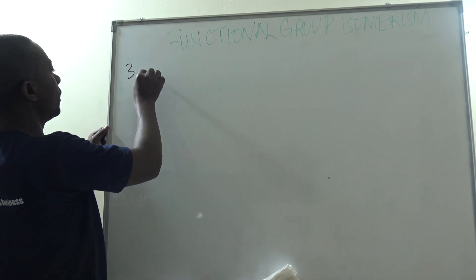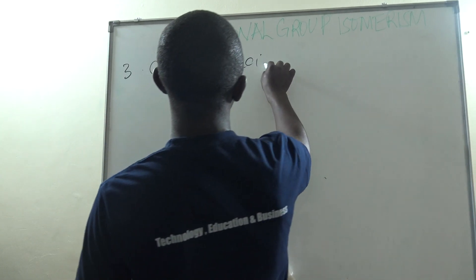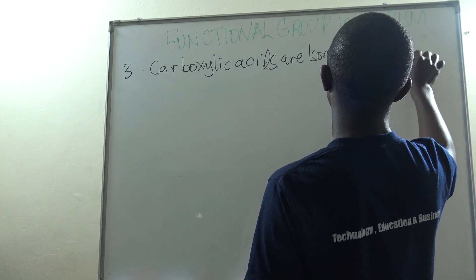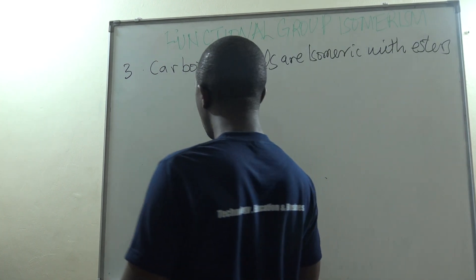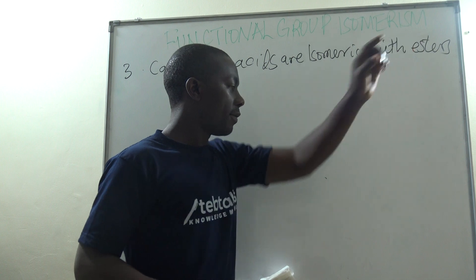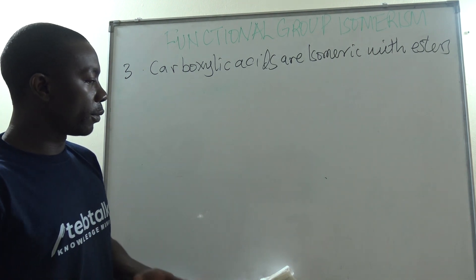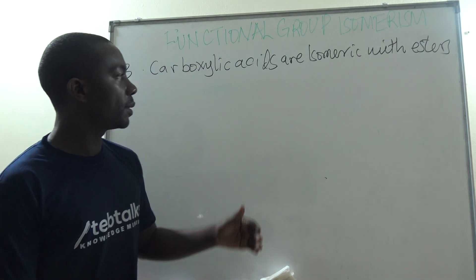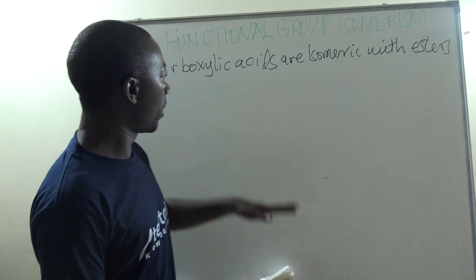Another group of compounds is carboxylic acids. Carboxylic acids are isomeric with esters. The difference between the two is that carboxylic acids have a terminal functional group, while esters have an internal functional group — the same principle that applies to alcohols and ethers. Aldehydes also have a terminal functional group, while ketones have an internal functional group.